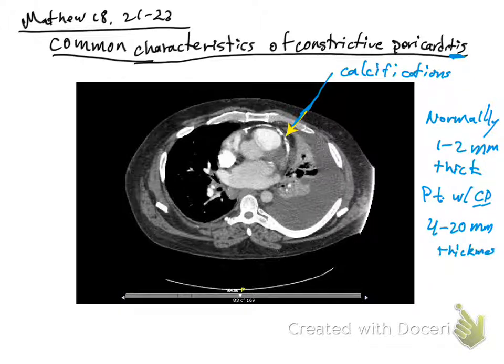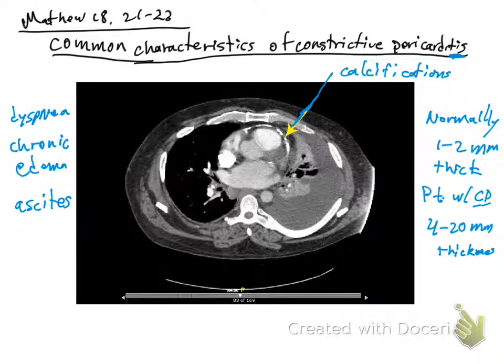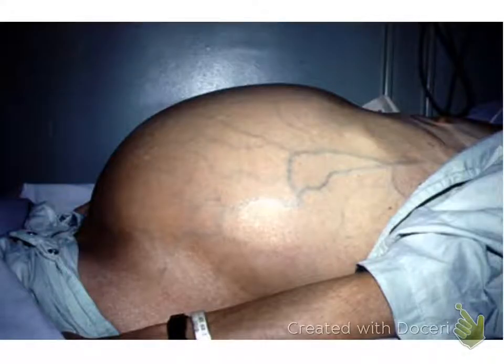These patients typically present with dyspnea, chronic edema, and ascites. Ascites is an abnormal accumulation of fluid within the abdomen. There are different causes of ascites, including cirrhosis of the liver, cancer within the abdomen, congestive heart failure, and tuberculosis. We'll see here a picture of a person with ascites.